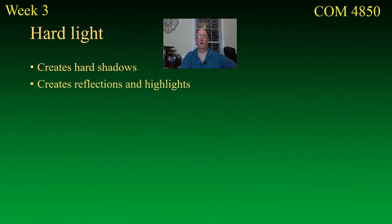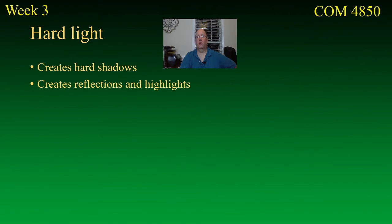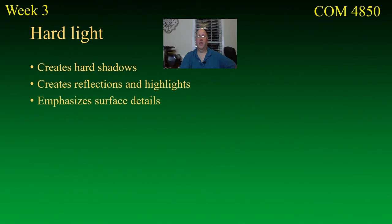Hard lights also create reflections and highlights. If you have a shiny object, that hard light is going to hit it and create a highlight — usually a small one. A point source of light creates a small bright highlight, like a little star on a shiny object. It will also create reflections on other surfaces and will emphasize surface details. If you've got an object that's cracked or rough, you'll see all those little dimples because each one will have its own shadow.